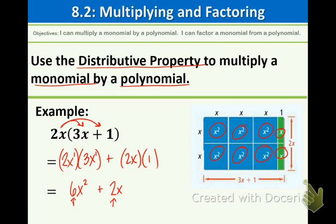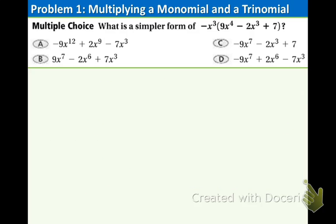Let's take a look at our very first example officially. What is a simpler form of this expression? Negative x cubed times 9x to the 4th minus 2x to the 3rd plus 7 — definitely a mouthful. I suggest you rewrite this and feel free to put a little 1 in front; I think that will help with this problem.